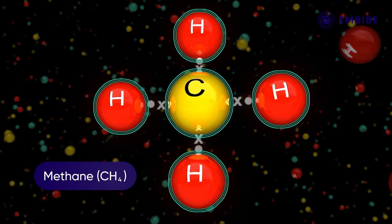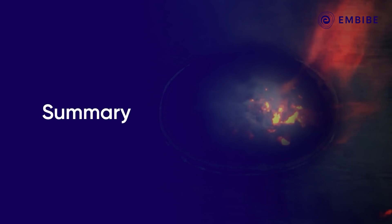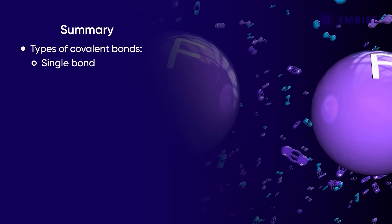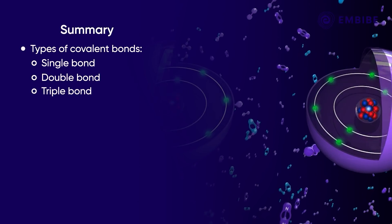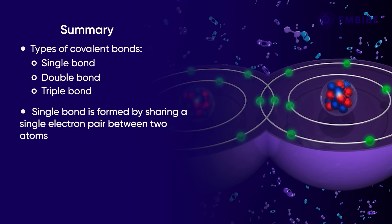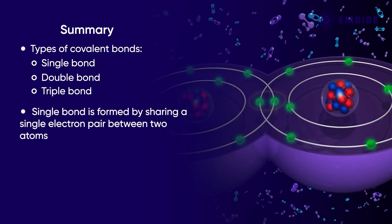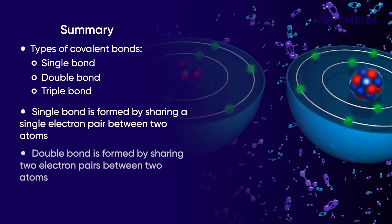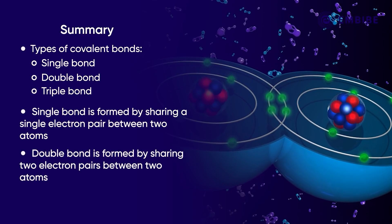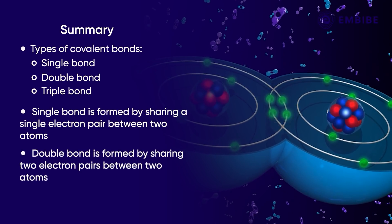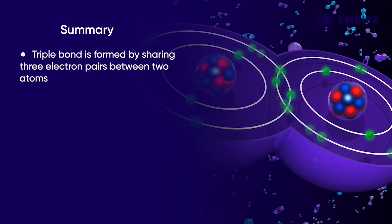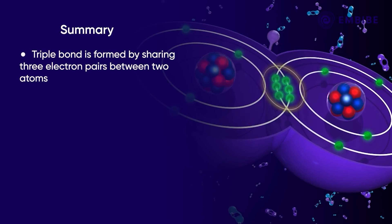To summarize, we have studied types of covalent bonds: single bond, double bond, triple bond. A single covalent bond is formed by sharing a single electron pair between two atoms. A double bond is formed by sharing two electron pairs between two atoms, while a triple bond is formed by sharing three electron pairs between two atoms.